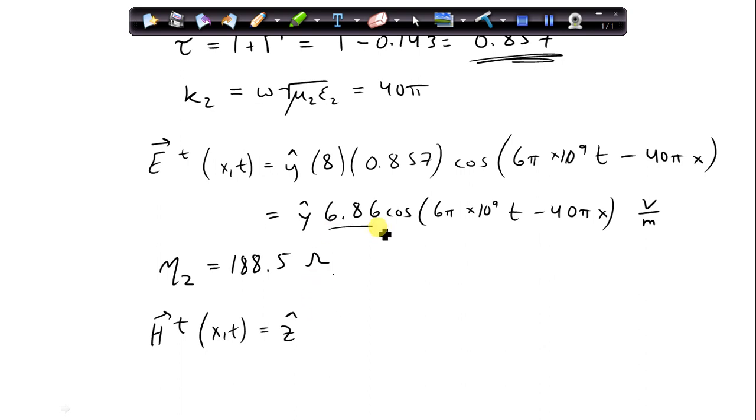We can obtain it either from the incident magnetic field or from the transmitted electric field. So I'm going to use 6.86 divided by eta 2, 188.5, and we have cosine omega t.